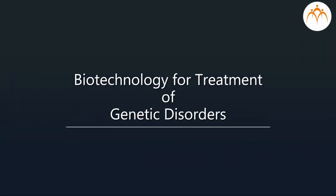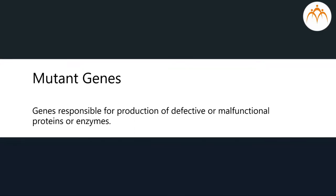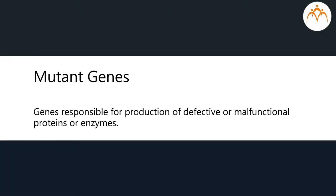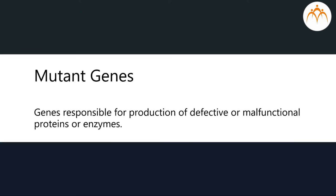Biotechnology for treatment of genetic disorders. Certain human diseases and disorders are caused by defective genes or gene mutations — for example, sickle cell anemia, thalassemia, phenylketonuria, and cystic fibrosis. In such genetic diseases, certain proteins or enzymes produced in patients are defective or malfunctional because the genes responsible for their production are defective. Such defective genes are termed mutant genes.